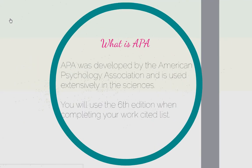We're going to use APA. Some of you may have done MLA papers before — it's a different type of citation style. APA was developed by the American Psychological Association, and a lot of sciences use it when they do research. Just for your information, we're going to use the 6th edition. That's what's on Purdue OWL and that's what's on Son of Citation Machine — it's the newest revision. When you want to double check, if you use any other sites, make sure it's 6th edition or it might lead you a little bit astray.